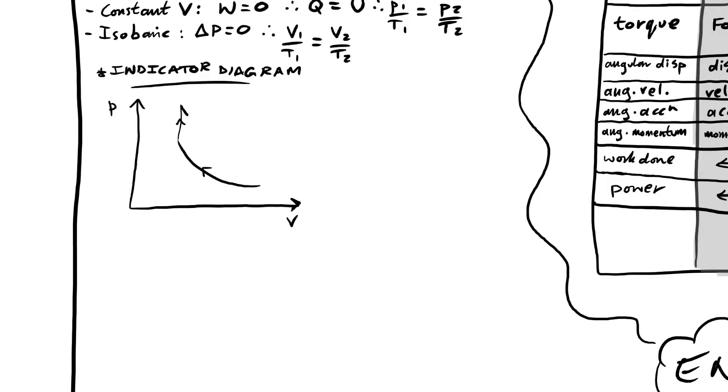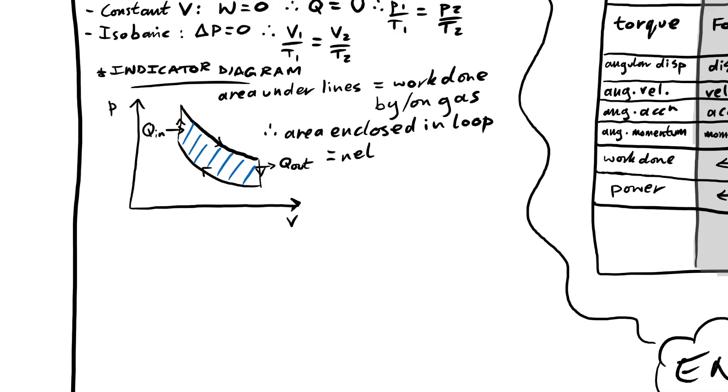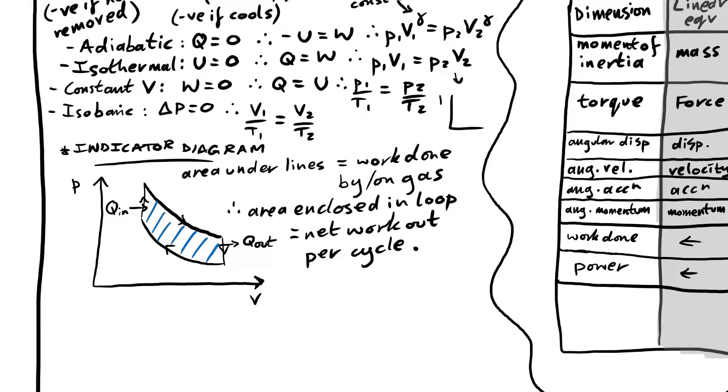Isobaric constant pressure. So therefore V over T equals V over T, which of course we know is Charles's law. We can draw a PV diagram to show what's happening with gases. If we have an indicator diagram, then we can show what happens to a gas as we compress it, put heat in, take heat out. Now the area under any line on a PV graph is equal to work done by or work done on a gas. It just depends whether it's being compressed or if it's expanding. So that means the area enclosed in a loop in an indicator diagram is equal to the net work out per cycle.